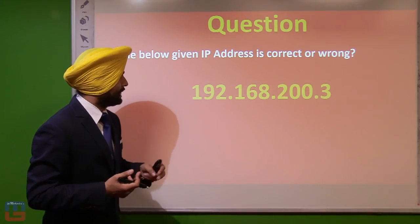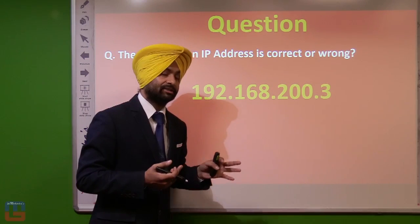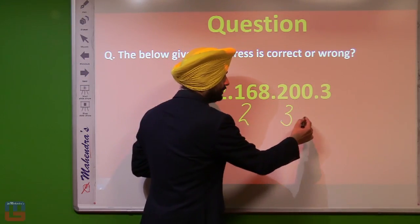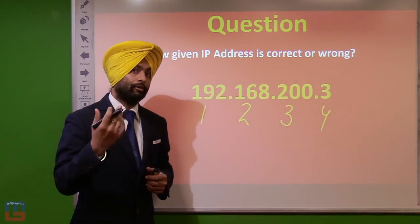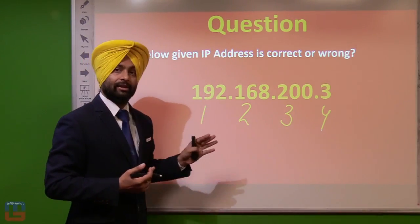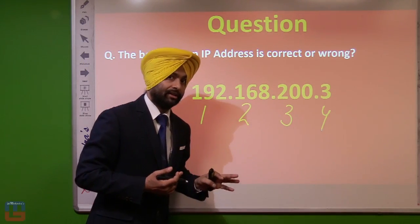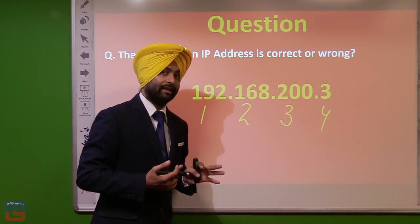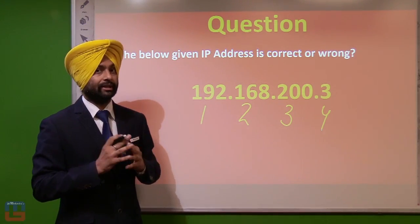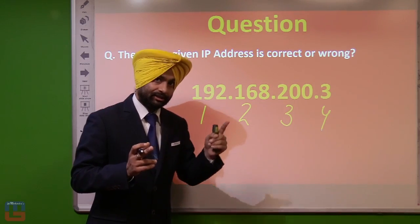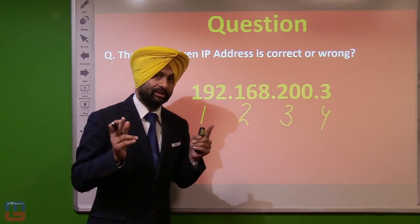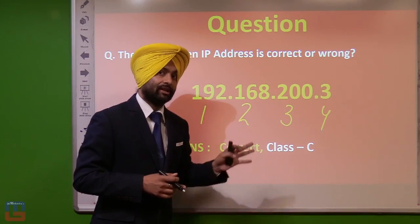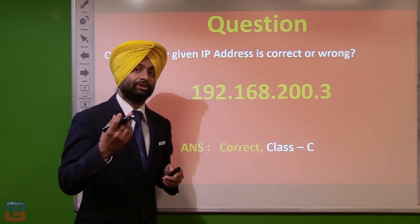The second question asks whether the given IP address is correct or wrong. First, check the number of IDs — we have 1, 2, 3, and 4. In no case can we exceed the limit of four IDs. We have three network IDs and one host ID, placing it in Class C. Since all IDs fall within valid IP ranges, this IP address is correct and belongs to Class C.